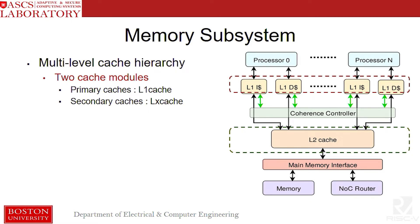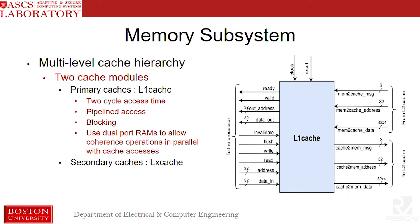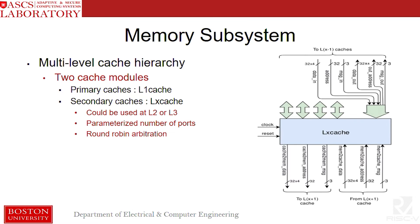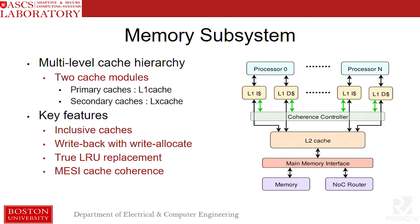There are two types of cache modules. The primary caches are blocking caches with two-cycle pipelined access. The secondary caches are designed to support a parameterized number of ports with round-robin arbitration, and can be used at any of the secondary levels. All the caches are inclusive write-back caches. They support true LRU replacement and MESI cache coherence is supported by the cache hierarchy. These modules are meant to act as starting points for a designer to build upon and expand on.